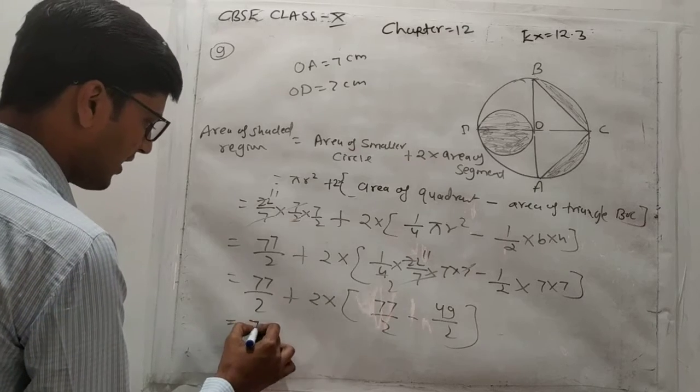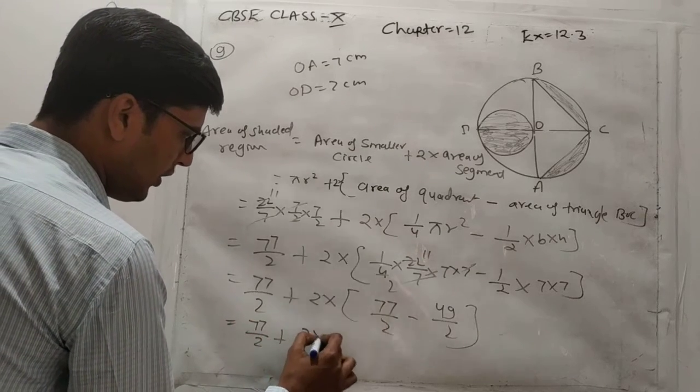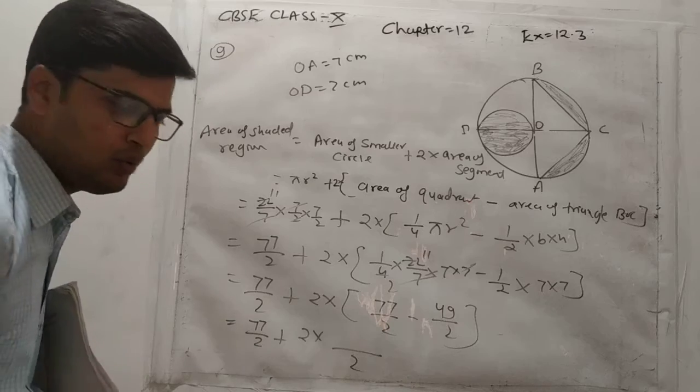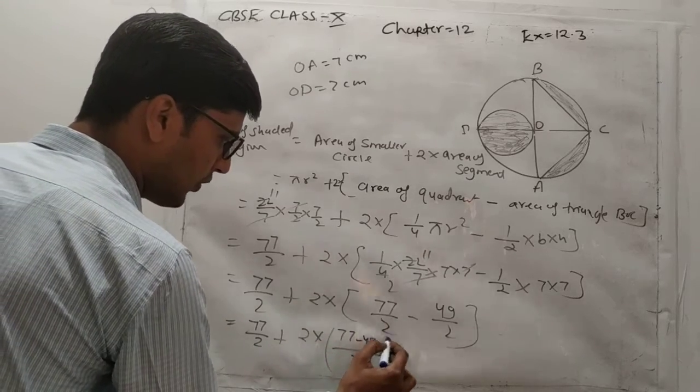So now, 77 upon 2 plus 2 into - if we take the LCM, it's 2. So it becomes 77 minus 49.